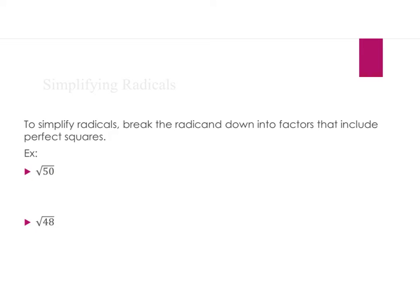Sometimes when we're taking square roots we get numbers that are not perfect squares, and we have to keep them in radical form, because radical form is more exact. What we can do is break the number under the radical down into perfect squares and simplify the radical.